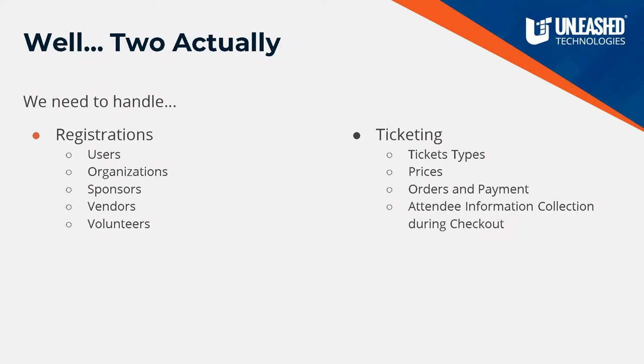For registrations, there'd be registration types to represent different types of users — and potentially not just users but groups and organizations. The idea would be to allow you to register any entity. The registration entity type has a dynamic field for the referenced entity, so you can pick whether it's a user, a group, or a node, if you choose to use nodes to represent organizations in your site. That's a dynamic entity reference. The second half is ticketing — ticket types, whether you're a sponsor paying a certain fee or an individual person, and wanting to track those different tiers.